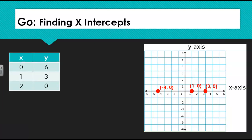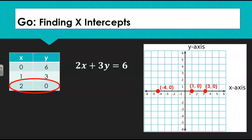If we look at these in terms of a table, again we know that our y-values are going to be zero for any x-intercepts, and we can clearly see from the table that our x-intercept here is (2, 0). And when we look at this in terms of an equation, again we know that our y-value must be zero, so if we substitute our y-variable with zero and solve for x, we will get our x-intercept.